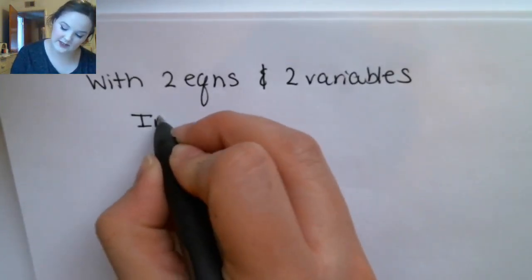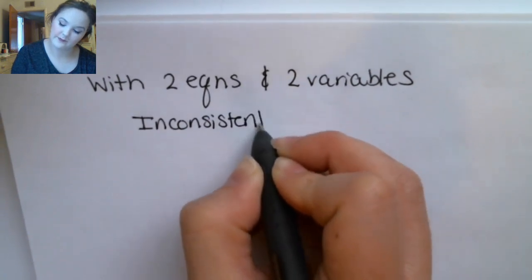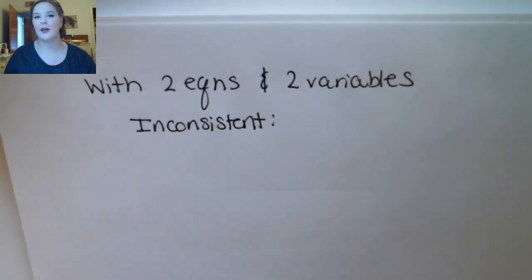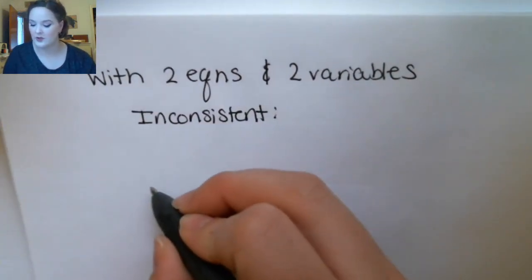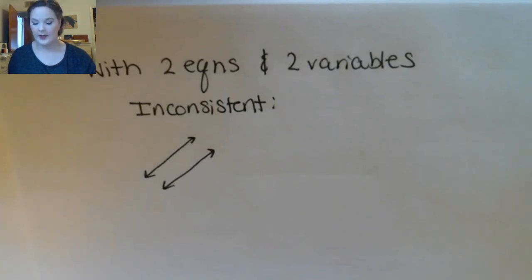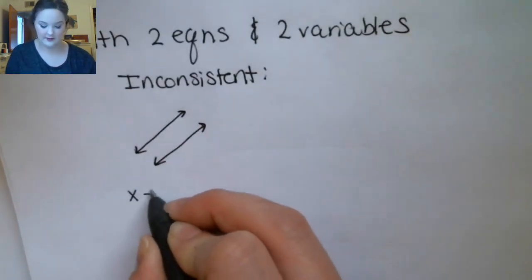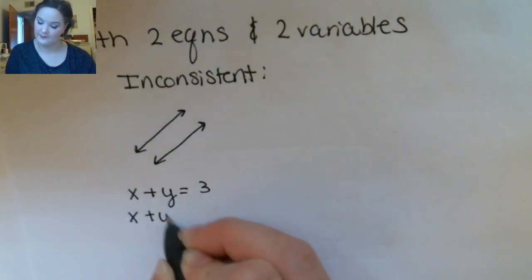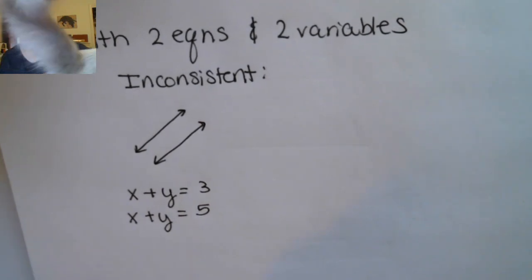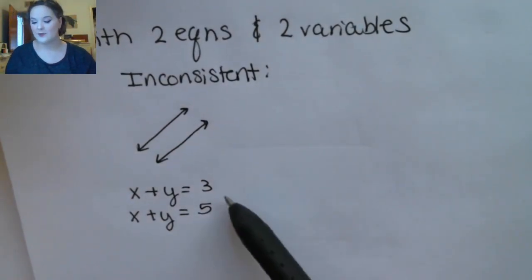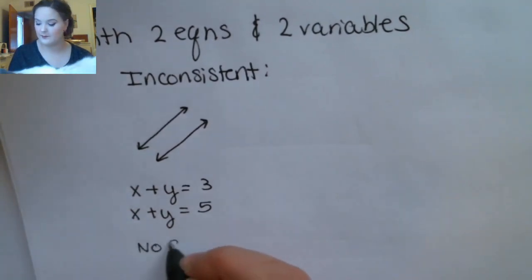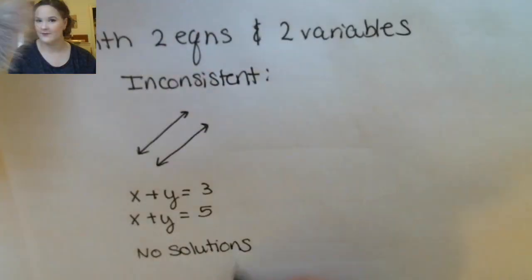If you have a system that is inconsistent, that means there are no solutions at all. When you look at the graph, that means there's no intersection of the two lines, so those two lines are parallel. An example of an inconsistent system would look like this — you can see that system doesn't have any solutions. It's not possible for x plus y to be both three and five, so there are no solutions to this system.